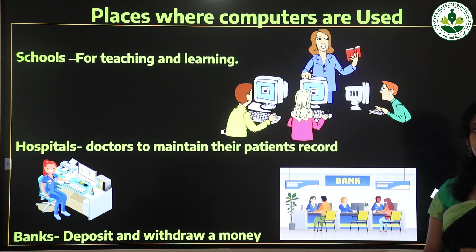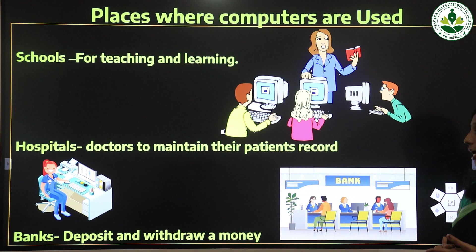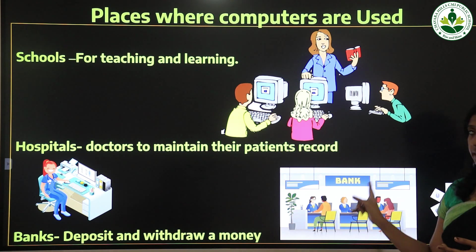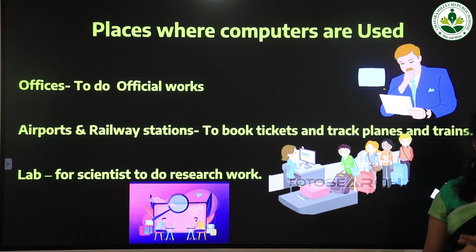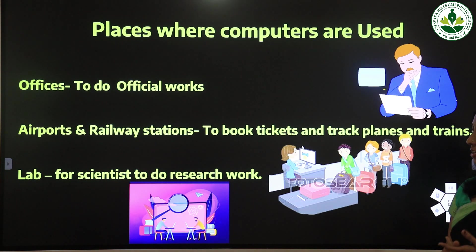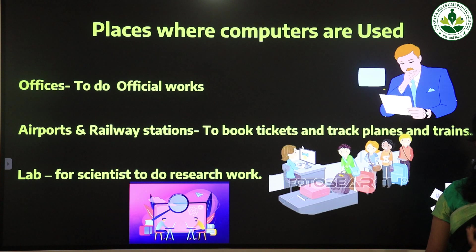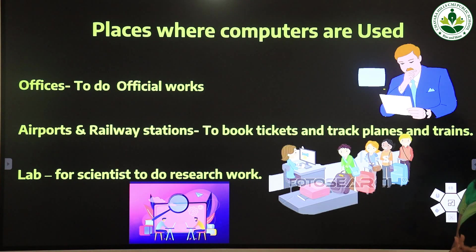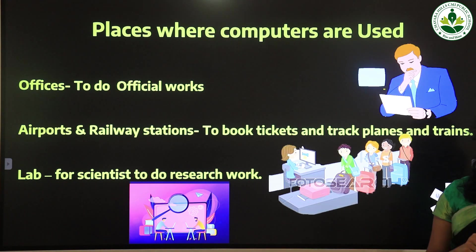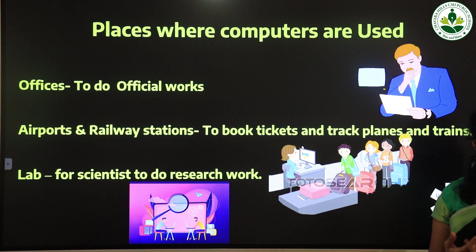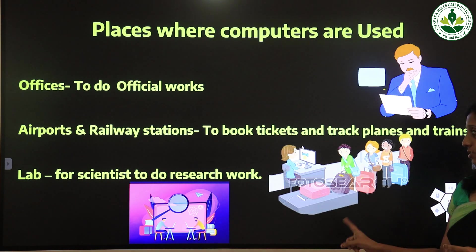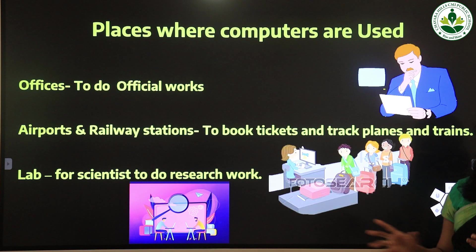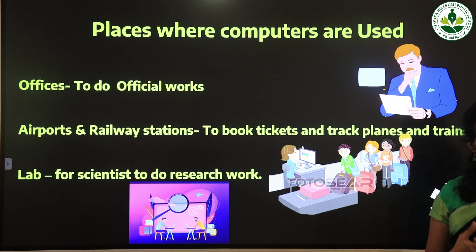Computers are used in banks to deposit and withdraw money. They are used in offices to do office work, and at airports and railway stations to book tickets and track planes and trains. Computers are also used in labs for scientific research. These are the places where we use computers.